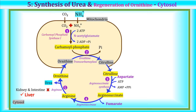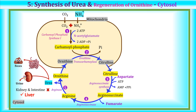The urea produced in the liver is transported in the blood to the kidneys, where it is excreted in urine. Some urea reaches the intestine, where it is degraded to ammonia and carbon dioxide by the enzyme urease of intestinal bacteria. The ammonia produced is usually lost in feces, but can also combine with protons in gastric fluid to form ammonium ion, reducing proton concentration and making the pH slightly alkaline.